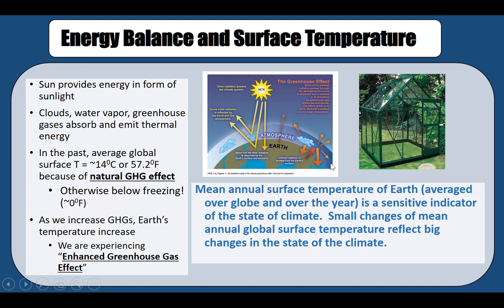This heat retained by greenhouse gases is a natural effect — the earth has always had greenhouse gases. In the absence of the greenhouse gas effect, the earth would be freezing cold and nothing would exist. Because of greenhouse gases, the earth is warmer and we are able to thrive. The earth maintains a comfortable overall average temperature of 14 degrees Celsius, or about 57.2 degrees Fahrenheit — the mean temperature.